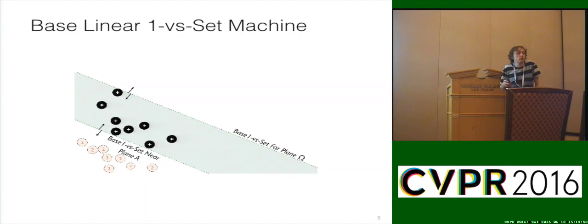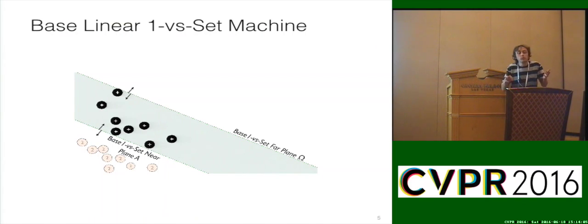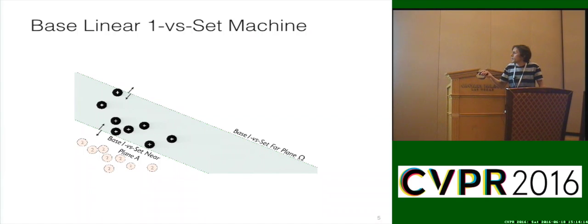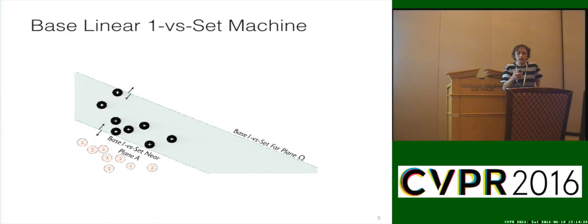The idea was to essentially create this slab-based model and perform an optimization that can generalize or specialize based on whatever known positive and negative samples we have at hand. We can imagine we have our positive class data, maybe some negative class data, and we want to train the normal decision boundary between the two classes we know about. Then we want to add the second plane — we'll call the first plane alpha and the second plane omega — and based on data on either side, we can adjust those different decision boundaries.